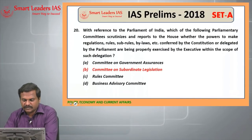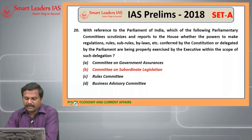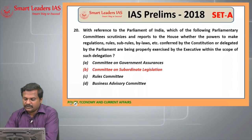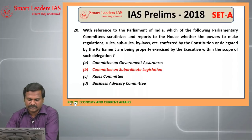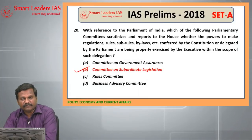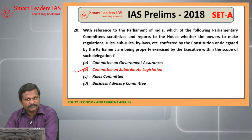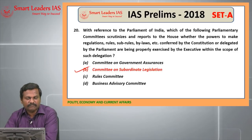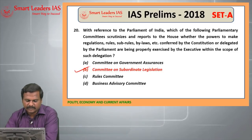Twentieth question: with respect to Parliament of India, which parliamentary committee scrutinizes and reports to the house whether powers to make regulations, rules, sub-laws, bylaws, etc., conferred by the Constitution are being properly exercised? The answer is the Committee on Subordinate Legislation, which has 15 members nominated by the Speaker. Every member serves a one-year term. Ministers cannot be appointed as members of this parliamentary committee.